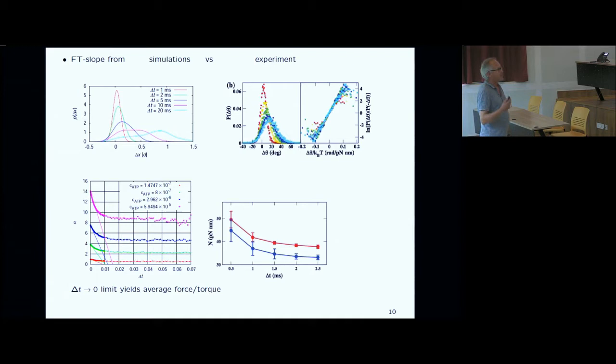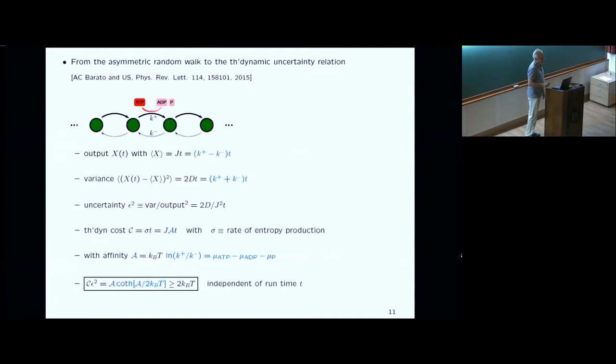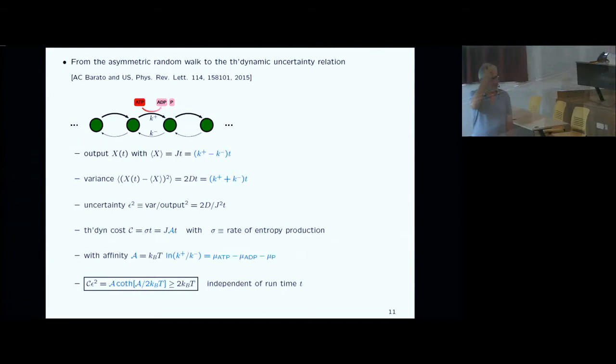The lesson of this introduction: you have to take into account all slow degrees of freedom. If there are some you do not control, the fluctuation theorem is spoiled. The question is then what you can really infer quantitatively. In the next step, I want to show you the thermodynamic uncertainty relation, which will hold even when you don't have control over all degrees of freedom.